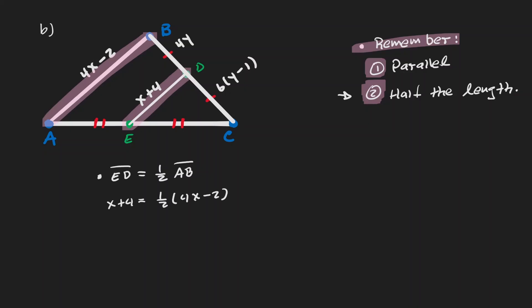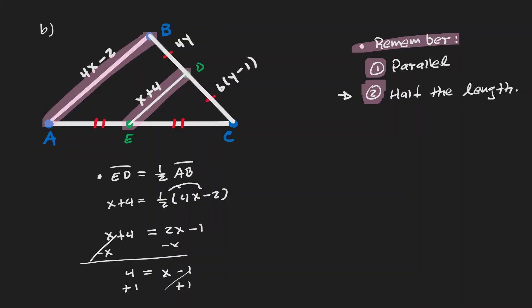Now we have a simple equation to solve. Distributing the one half, we get x plus 4 equals 2x minus 1. Putting all the x terms on the same side by subtracting x, we get 4 equals x minus 1. Adding 1 to both sides gives us our final value: x is equivalent to 5.